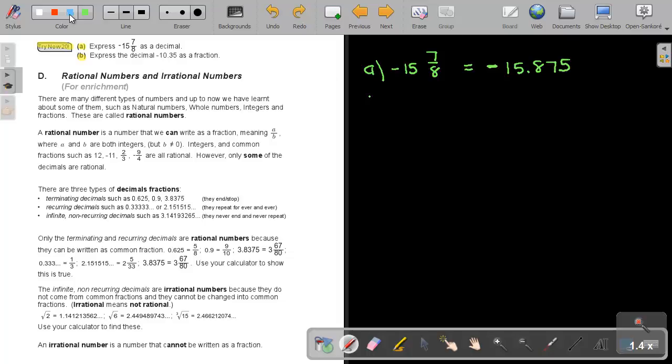Now let's look at number B. Express the decimal as a fraction. So it's negative 10.35. So rewrite the negative 10. And then it's just those two digits over 100, but you must simplify it. So you can divide by 5, divide by 5, and my answer will be negative 10 and 7 over 20. Or you can press 35 ABC 100 equals, and it will also give you 7 over 20.